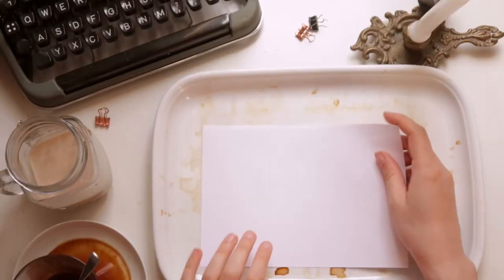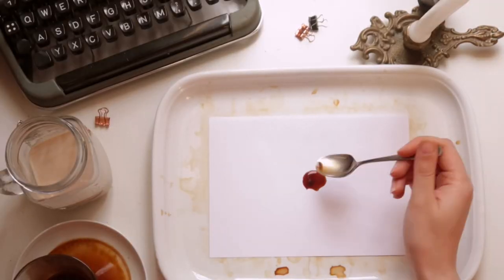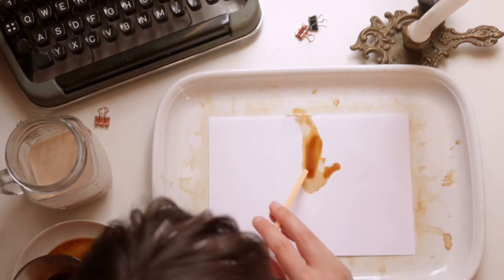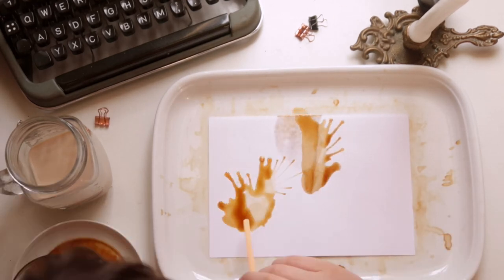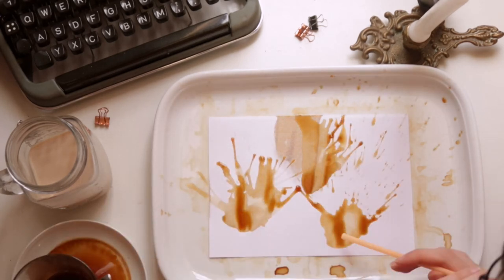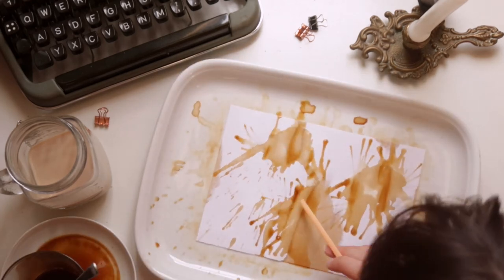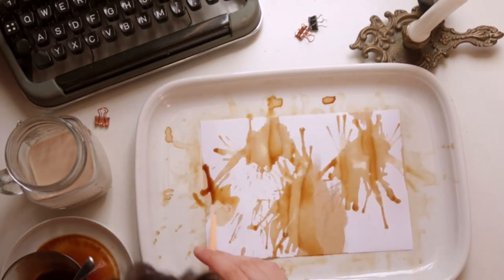Now we will use the straw to create some patterns. First, let's use the straw to move the coffee over the page by blowing onto it to create some organic looking shapes like little, I don't know, abstract animals kind of.